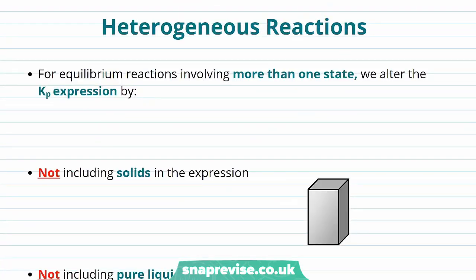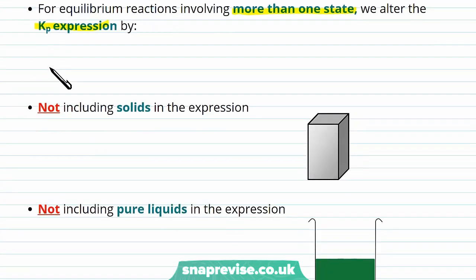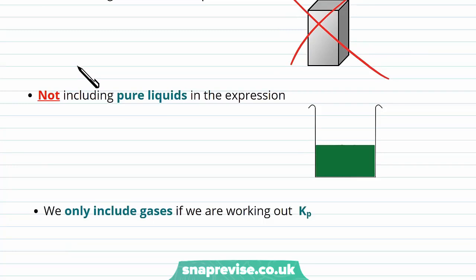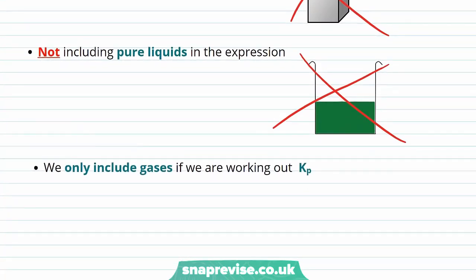You may have noticed all reactants and products in that example were gases. But what if a reaction involves more than one state — solids and gases, or liquids and gases? For these heterogeneous reactions, we simply alter the Kp expression by not including solids or pure liquids. We just leave them out and carry on including only the gases in our expression for Kp.